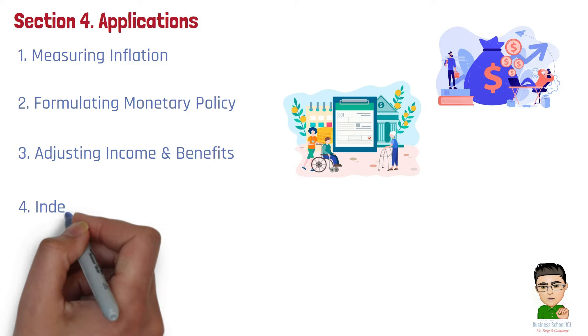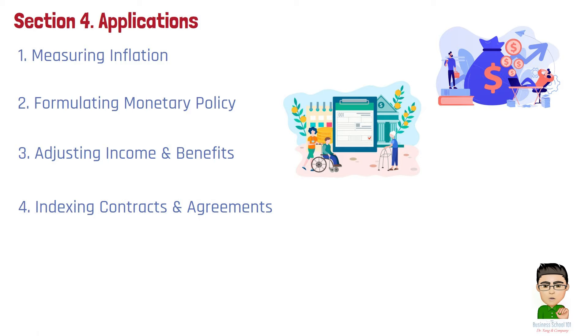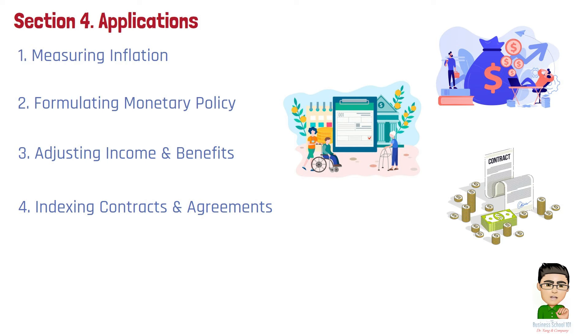Number 4. Indexing contracts and agreements. Many financial contracts, such as bonds and annuities, use CPI for indexation to provide inflation protection. This means that the returns on these investments are adjusted based on changes in the CPI, helping to preserve the purchasing power of the investment.